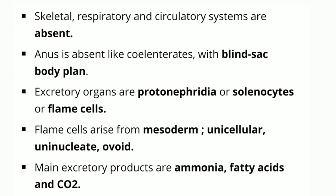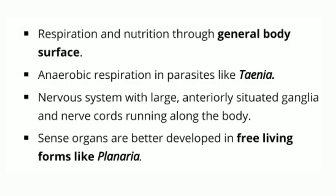Excretory organs are protonephridia, also called solenocytes or flame cells. Flame cells arise from mesoderm and are unicellular and uninucleate. Excretory products are ammonia, fatty acids and carbon dioxide. Respiration and nutrition take place through the general body surface. Anaerobic respiration occurs in parasites like Taenia.